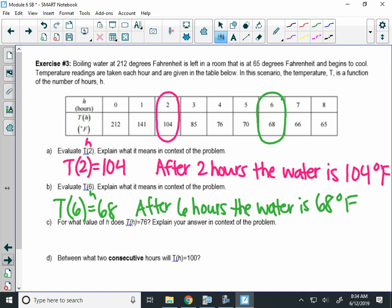Now, the next part says for what value of H? So, now we're finding the hours when the temperature, T of H, is 76. Well, I'm finding the temperature of 76 here. It looks like the hours is 4. So, it looks like it's going to take 4 hours. Finally, between what two consecutive hours will T of H equal 100? So, between what two hours will the temperature be 100 degrees? Well, it looks like I go from 104 to 85. So, somewhere in between 2 and 3 hours, I will get to 100 degrees.